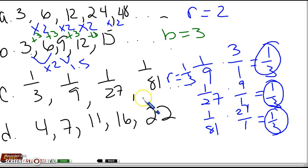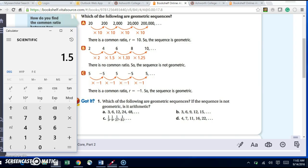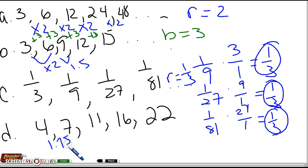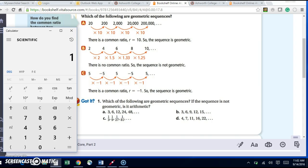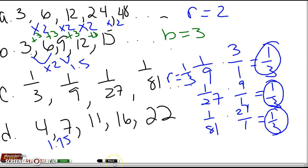Alright, last one. For part D, I have 4, 7, 11, 16, 22. So 7 divided by 4 is 1.75. Then I have 11 divided by 7. I get 1.57. I can stop right there. So it's not geometric.